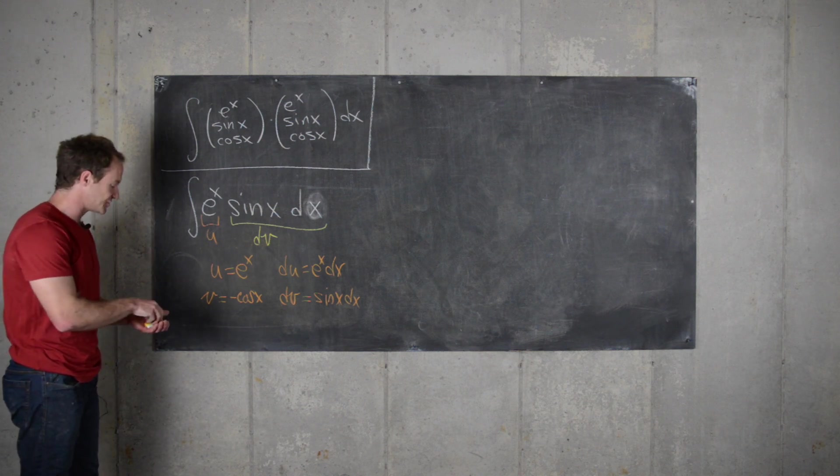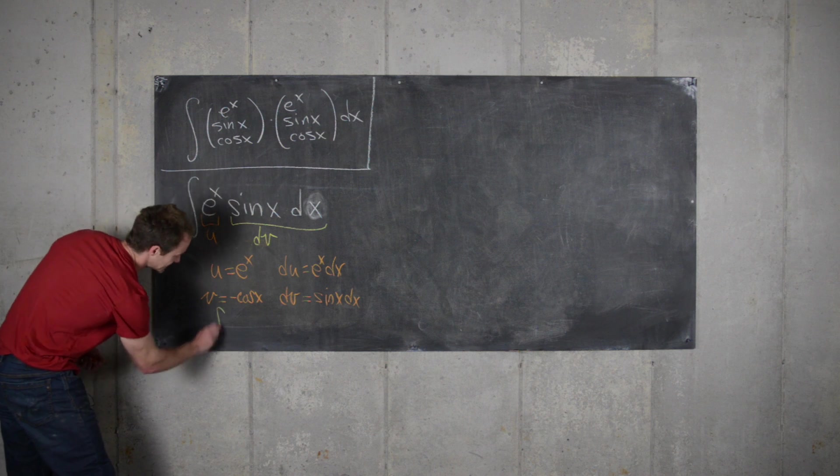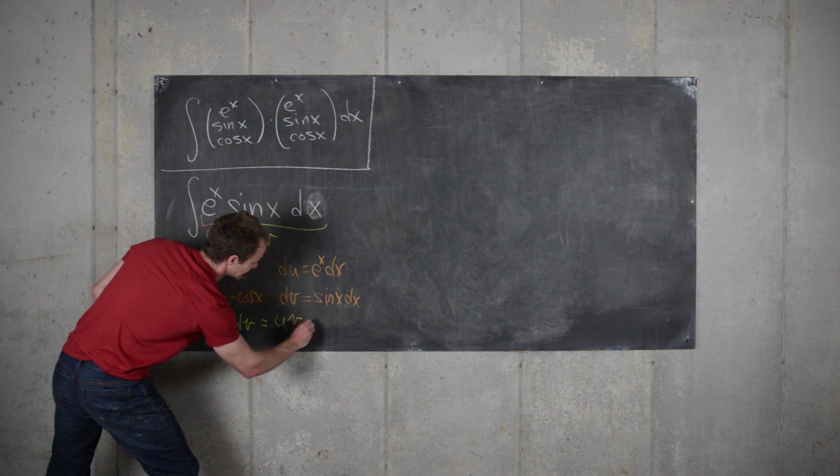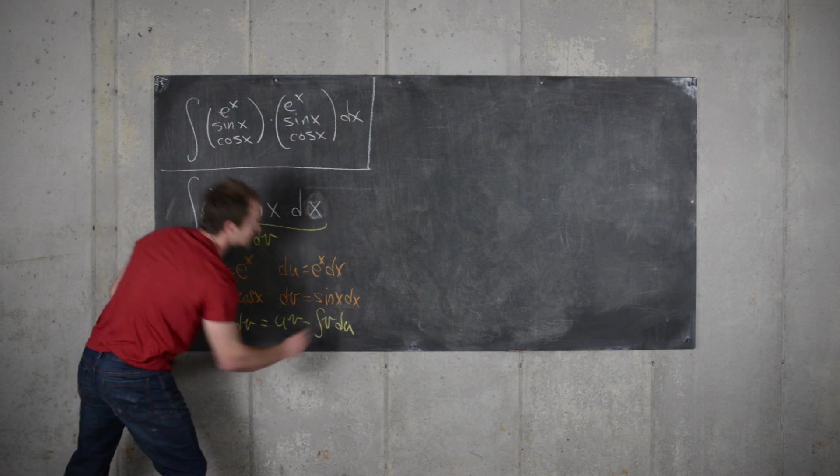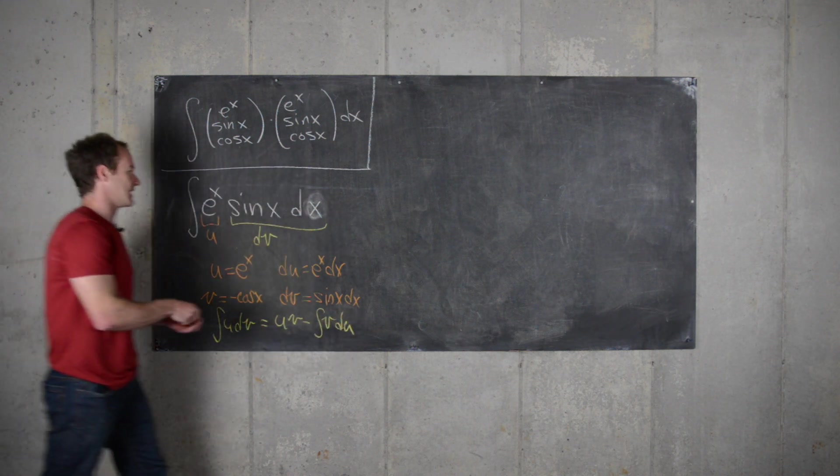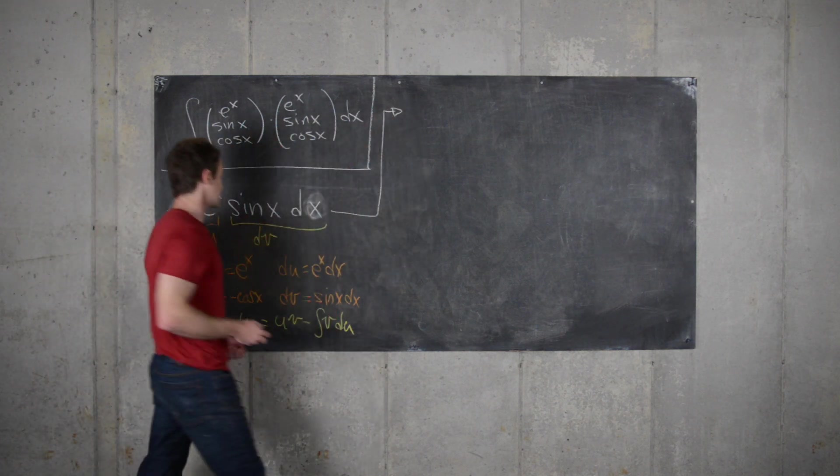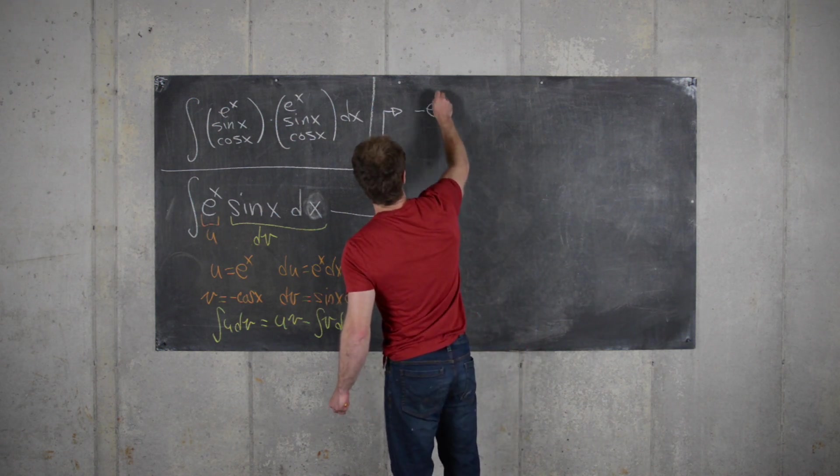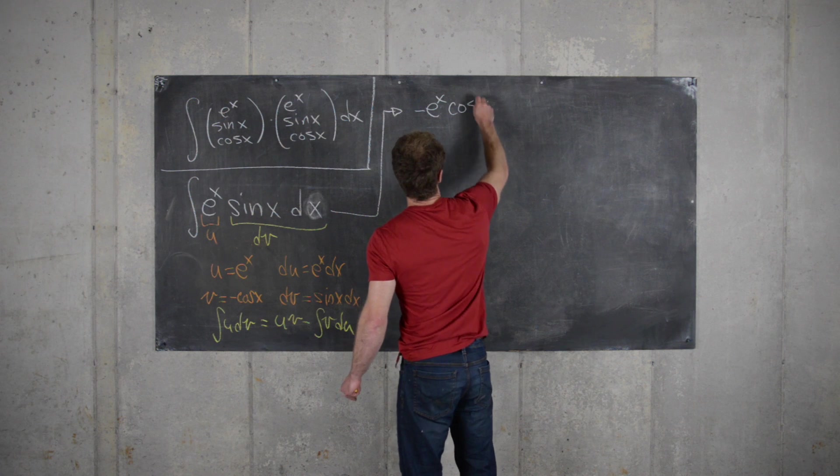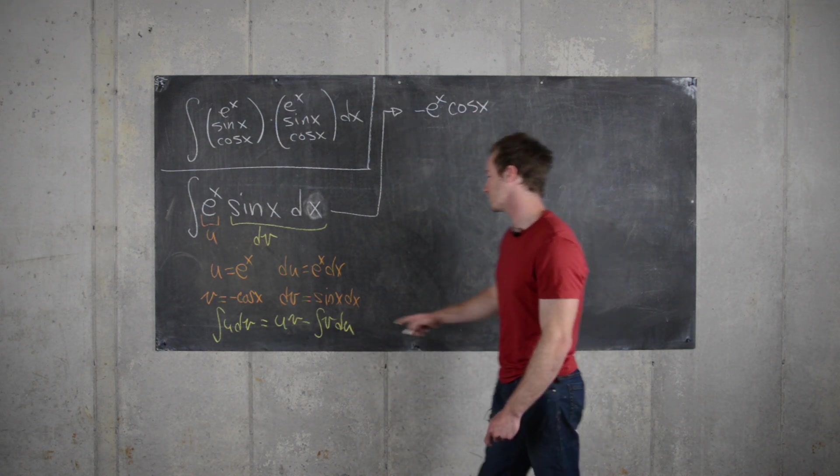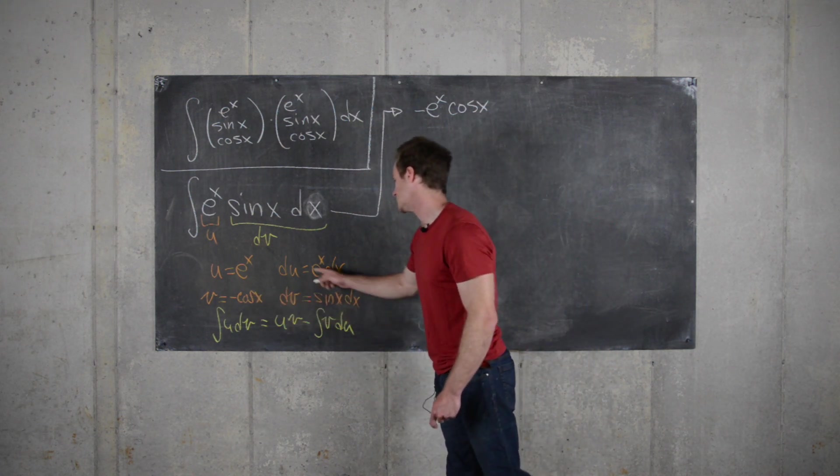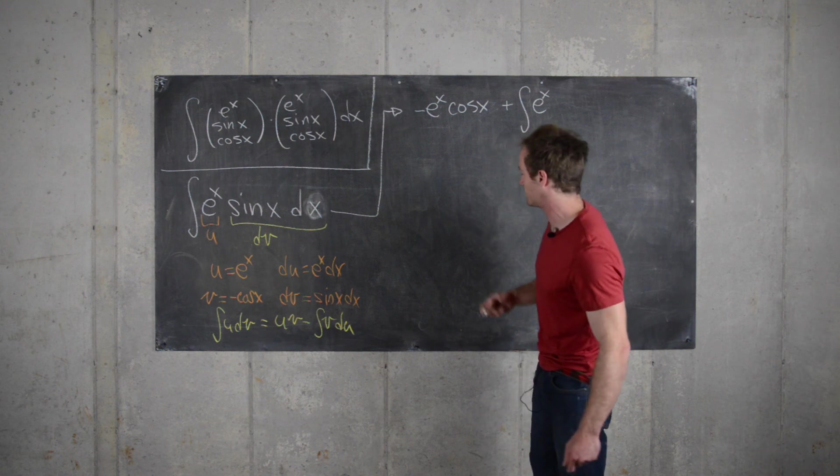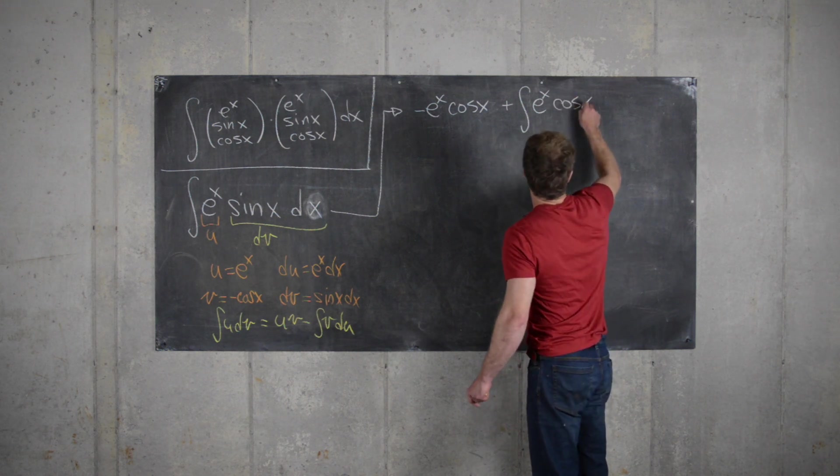And then using our integration by parts formula, which if you remember is u dv equals u times v minus the integral of v du. So that allows us to write this integral as u times v, so that'll be minus e to the x cosine x. And then minus the integral of v du. So notice the minus signs cancel and then we get plus the integral of e to the x cosine of x dx.